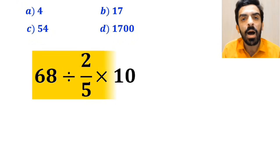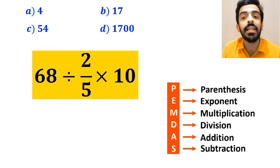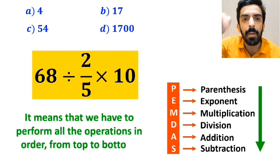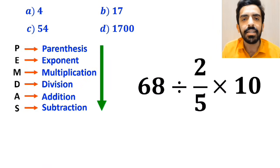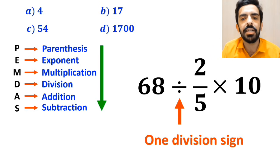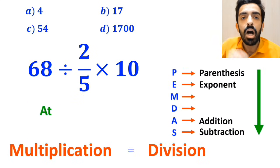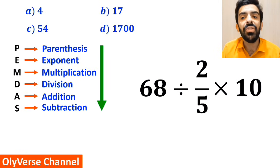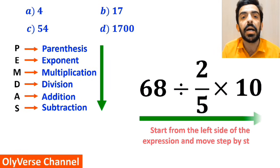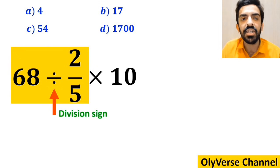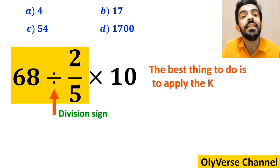Let me explain step by step how to solve this expression properly. Following the PEMDAS rule, we perform all operations in order from top to bottom. In this expression, we have one division sign followed by a multiplication sign. It's very important to note that multiplication and division are at the same level of precedence. In this case, we start from the left side of the expression and move step by step toward the right. So first we handle 68 divided by 2/5.